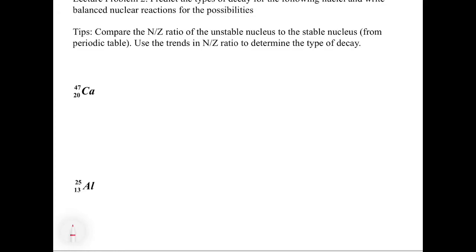Now if we look at lecture problem 2, we can look at what's going on with these two elements, calcium-47 and aluminum-25. So let's start by just calculating the n-to-z ratio.